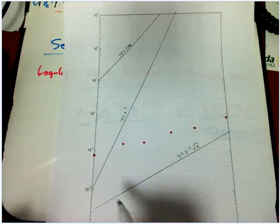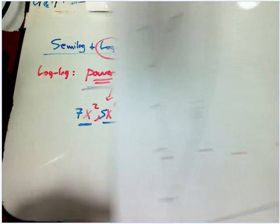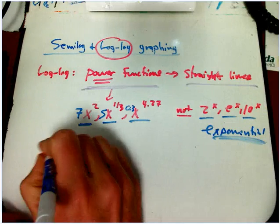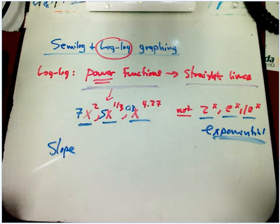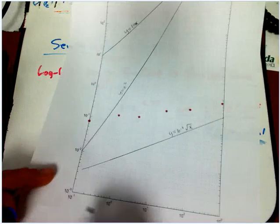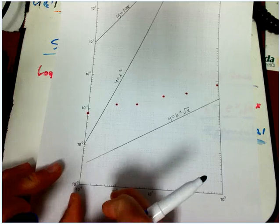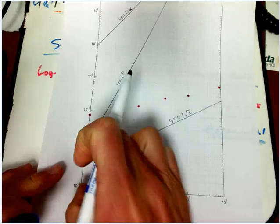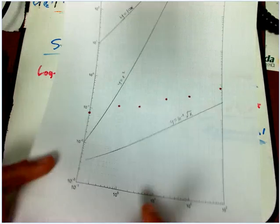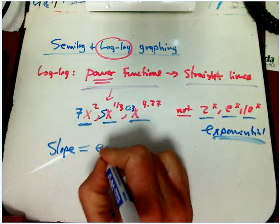And why the slopes are so special. The real punchline here is that the slope, as long as you're using exactly equal physical increments for a power of 10, a factor of 10 here and a factor of 10 here, the slope equals the exponent. That's awesome.